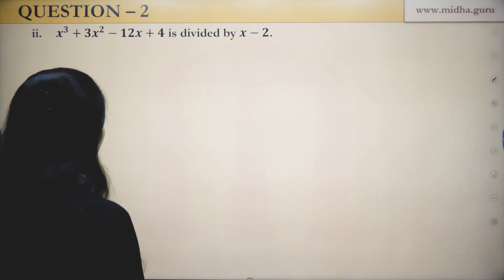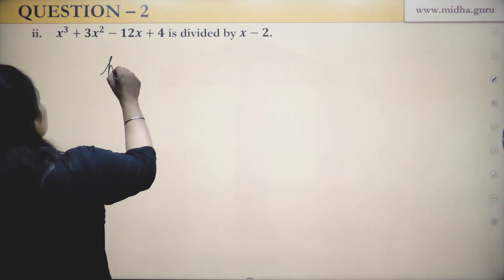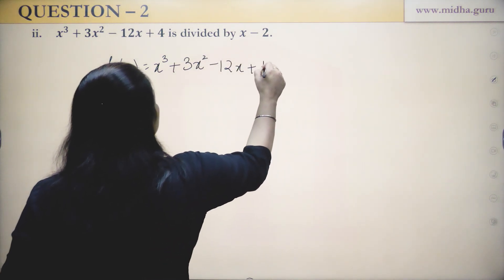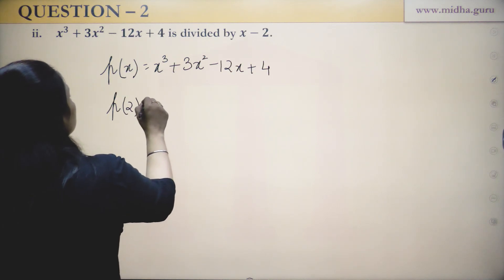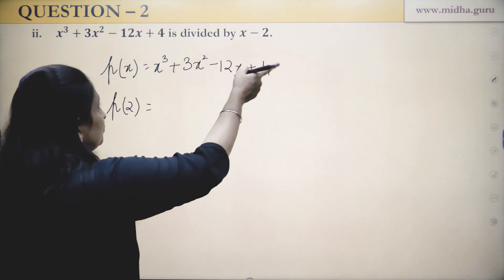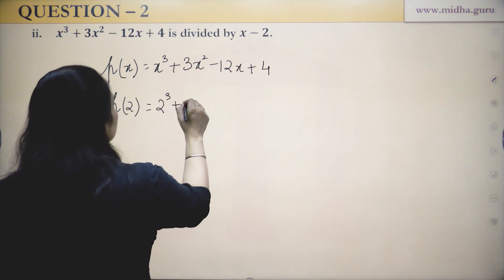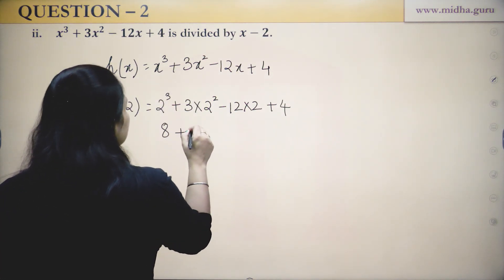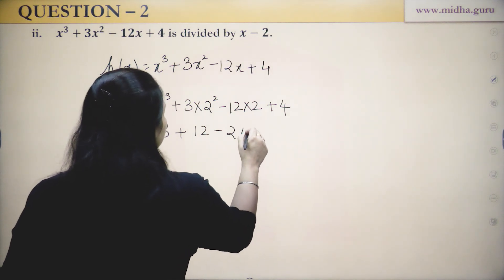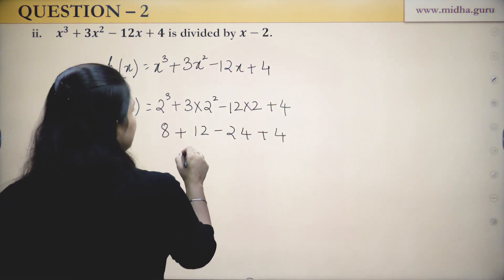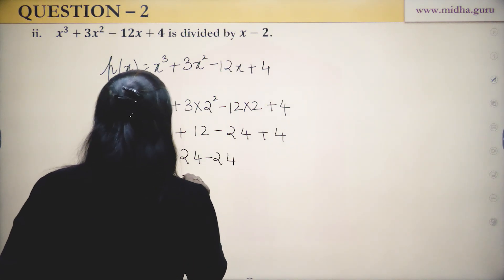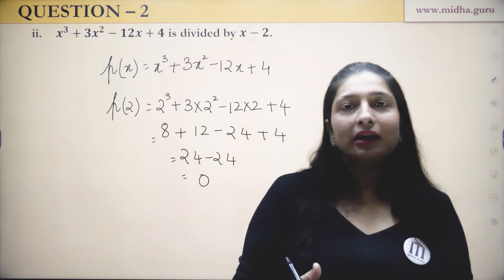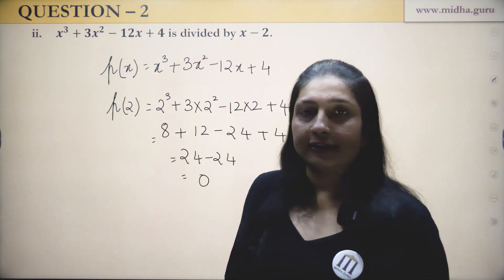Next part: find the remainder when x³ + 3x² − 12x + 4 is divided by X − 2. Equate X − 2 = 0, so X = 2. Substitute: p(2) = 8 + 12 − 24 + 4 = 0. The remainder is 0. That means X − 2 is a factor of this polynomial, but the question only asks for the remainder, so the answer is 0.